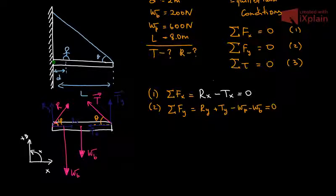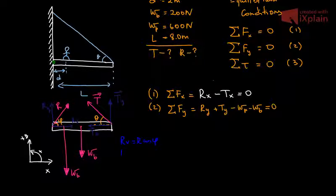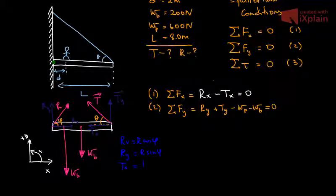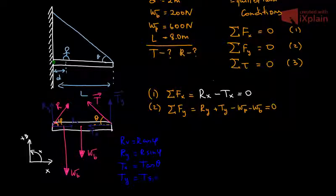Let's identify the components with some side work. Rx equals R cosine phi. Ry equals R sine phi. Tx equals T cosine theta. Ty equals T sine theta.